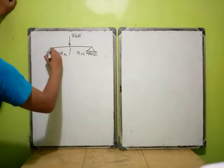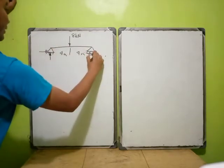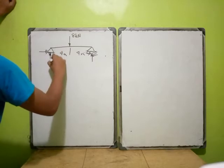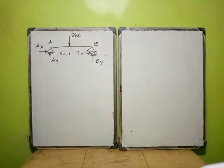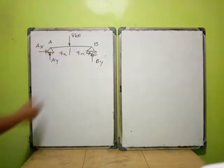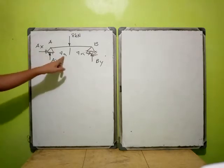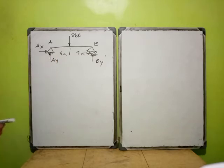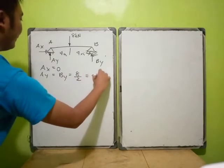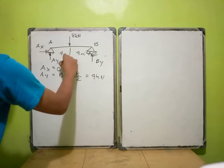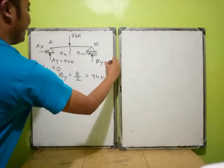So therefore we will have three reactions: AY, AX, and BY. This is point A and point B. Somehow this is a symmetric beam — if you cut it into two, they will be of equal length: 4 meters on the left and 4 meters on the right. So technically AX is zero, and AY equals BY equals one half of 8, which is 4 kilonewtons.